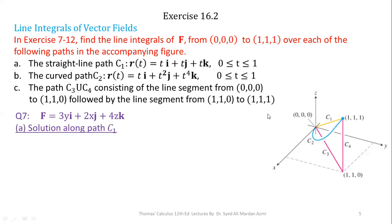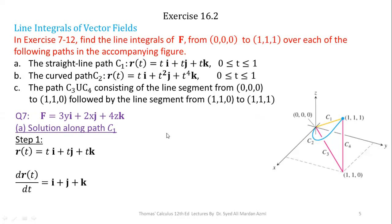To calculate the line integral of this vector field along path c1, we divide our procedure into four steps. In step one, since r(t) is given to us, we calculate its derivative with respect to t. The derivative of r(t) equals ti plus tj plus tk gives dr/dt equals i plus j plus k, because the derivative of t with respect to t is 1 for each component.